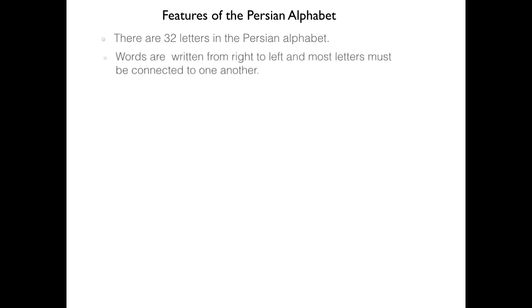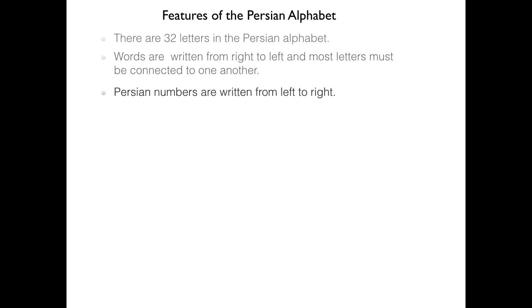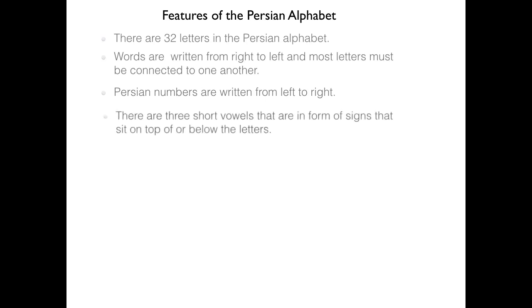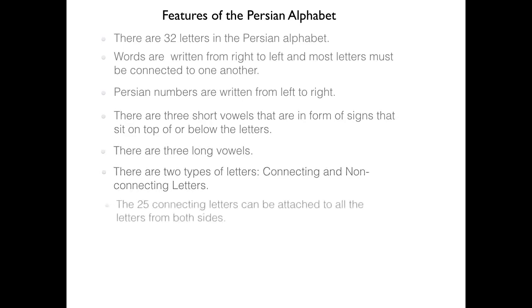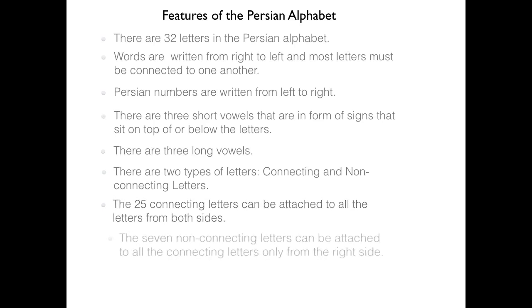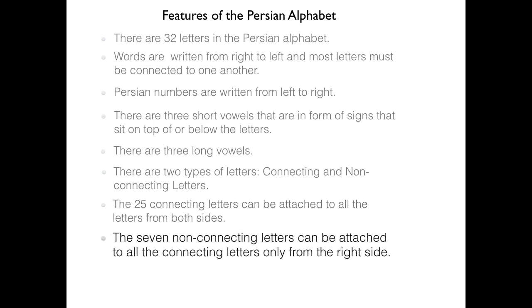Let's review what we just learned. There are 32 letters in the Persian alphabet. Words are written from right to left and most letters must be connected to one another. Numbers are written from left to right. There are three short vowels in the form of signs that sit on top of or below the letters. There are three long vowels that are actual alphabetical letters. There are two types of letters: connecting and non-connecting. The 25 connecting letters attach from both sides; the 7 non-connecting letters attach only from the right side.